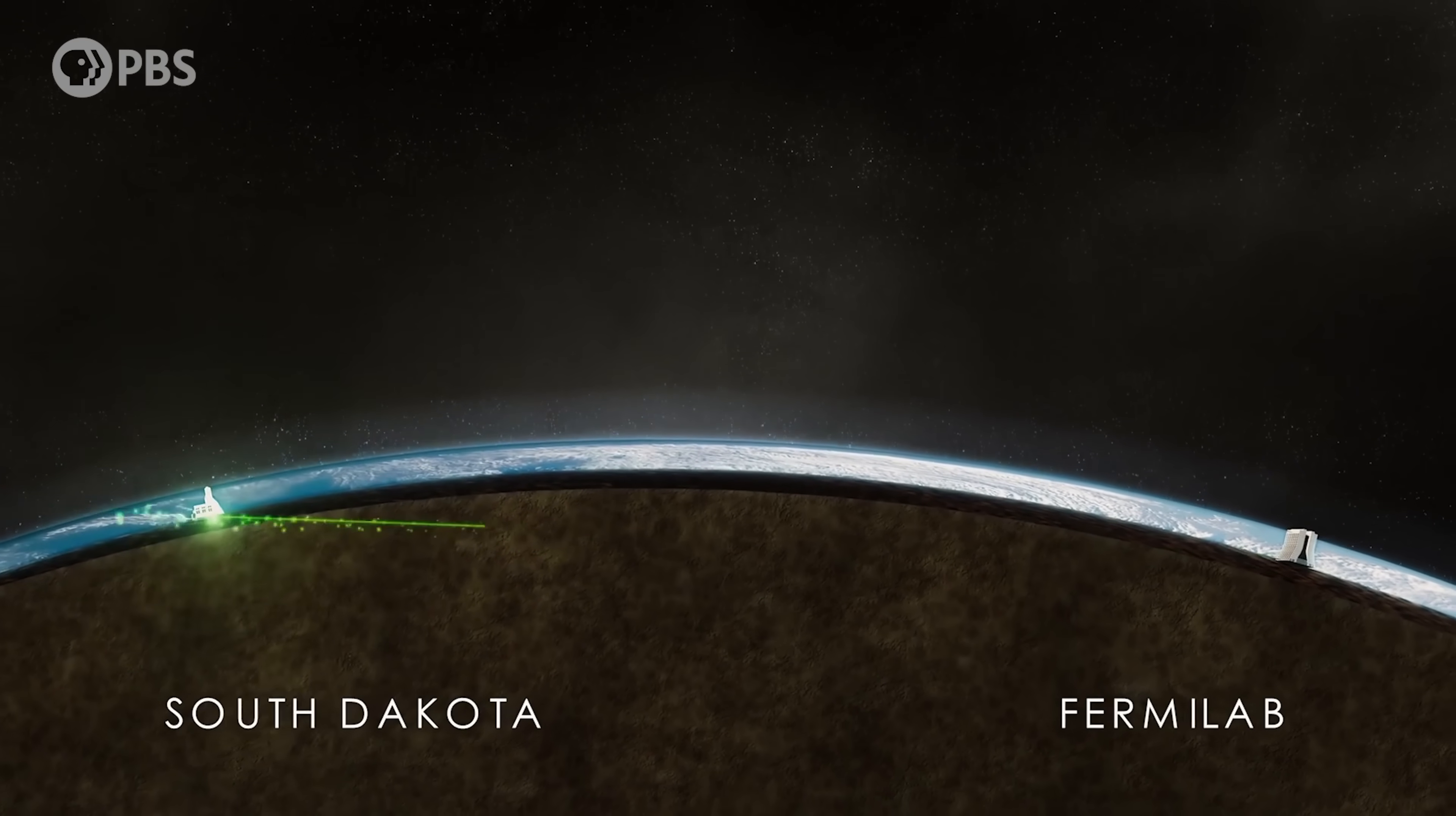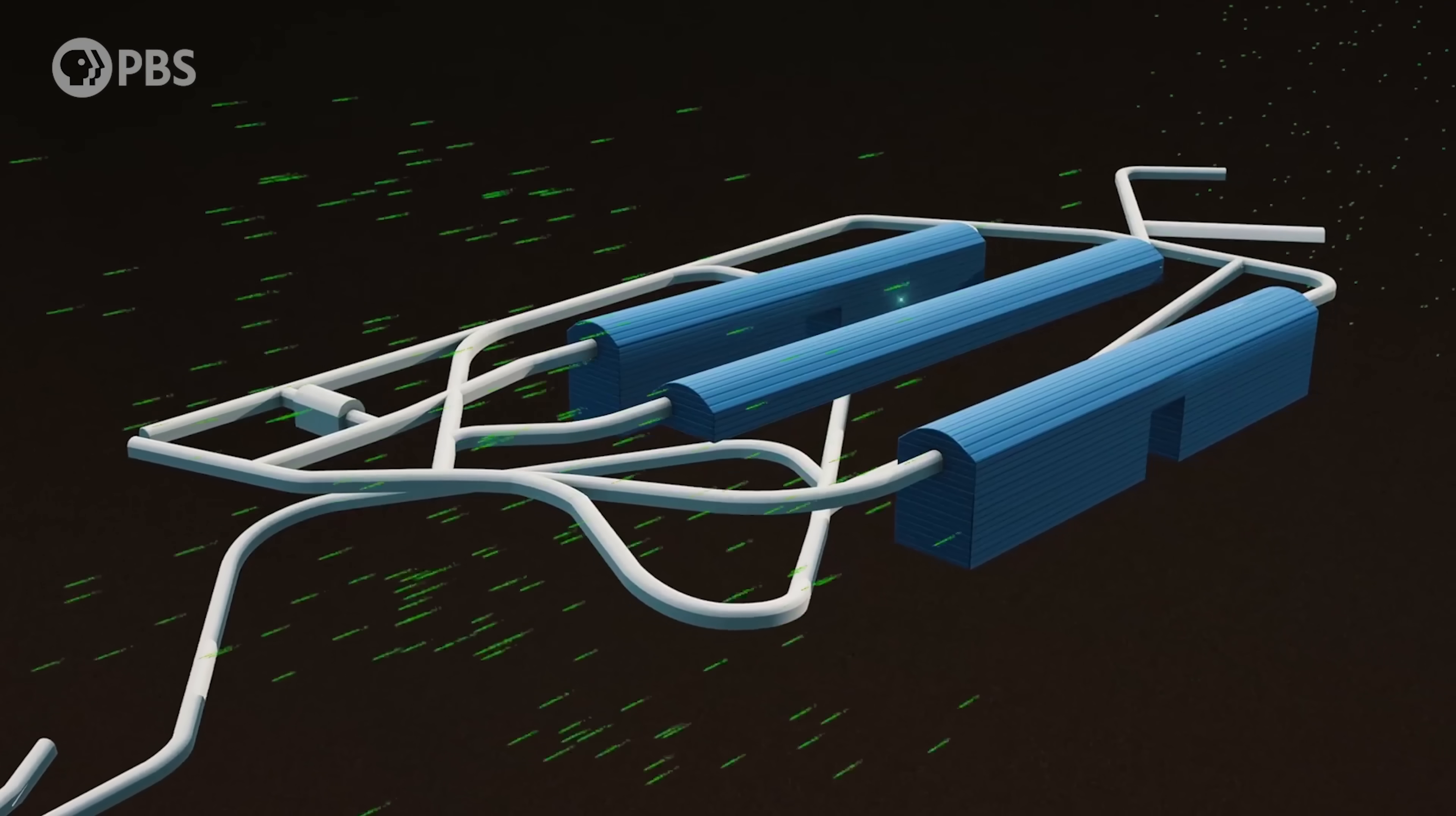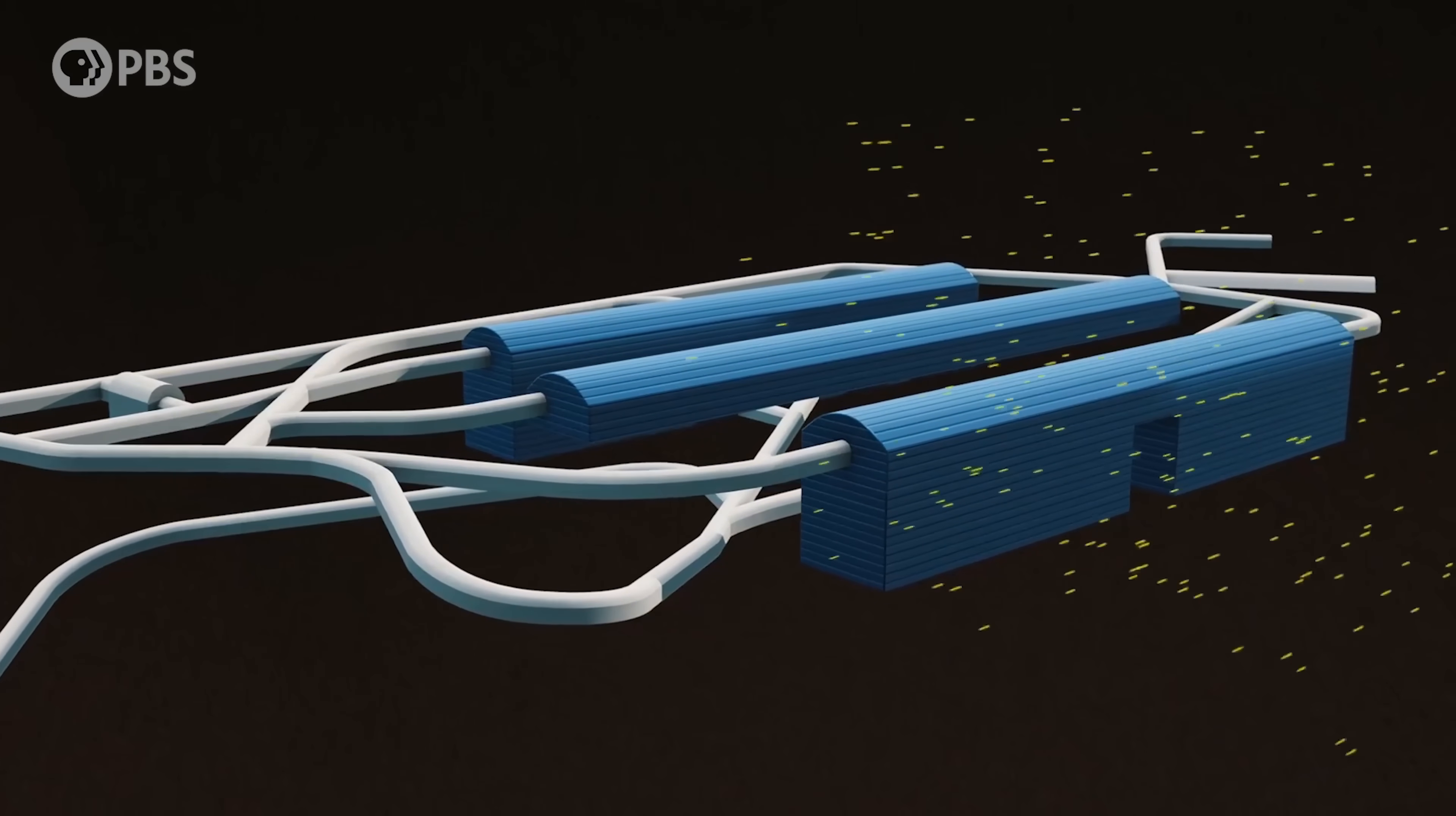Where a huge detector weighing 70,000 tons consisting of liquid argon and located a mile underground will catch the beam and tell us what happened to the neutrinos as they passed from here to there.